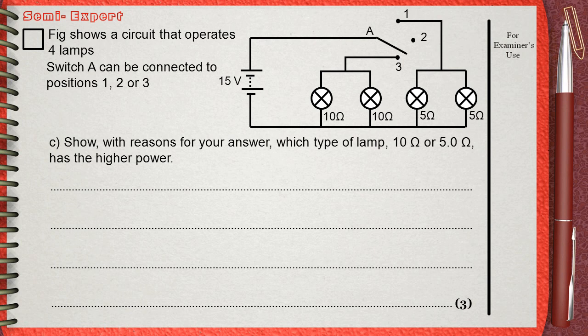Question C. Show with reasons for your answer which type of lamp, 10 ohms or 5 ohms, has the higher power.